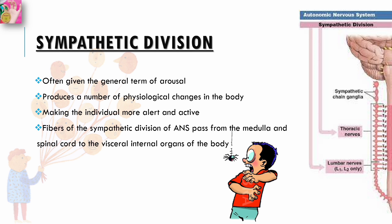Fibers of the sympathetic division of the autonomic nervous system pass from the medulla and spinal cord to the visceral internal organs of the body. When activated, each of these changes contributes to the state of alertness and preparedness for action which we loosely call arousal.